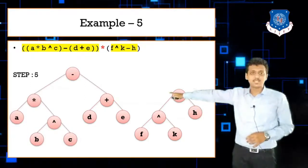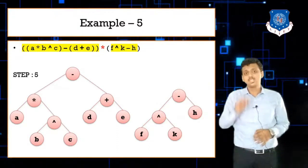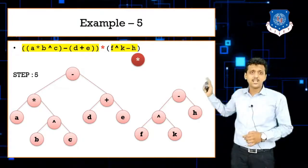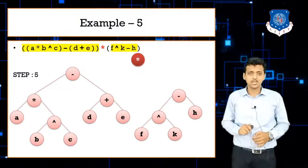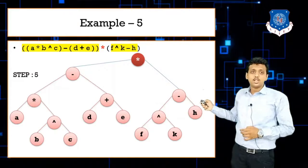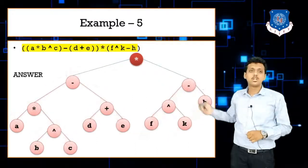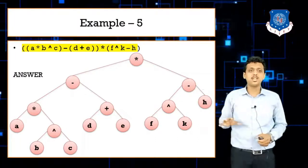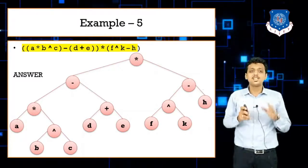Finally, the outermost star combines both bracket results. The left link of star connects to the first bracket's minus node, and the right link connects to the second bracket's minus node (f ^ k - h). Aligning all nodes to their correct levels, this is the final expression tree, with all siblings on the same level.